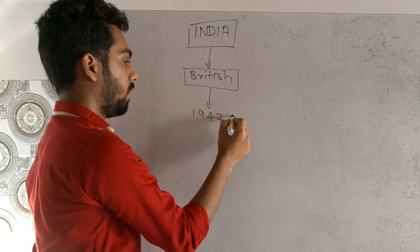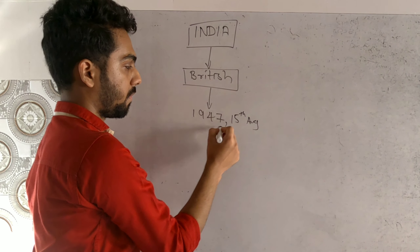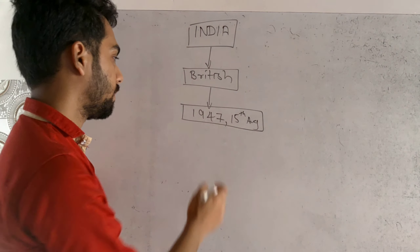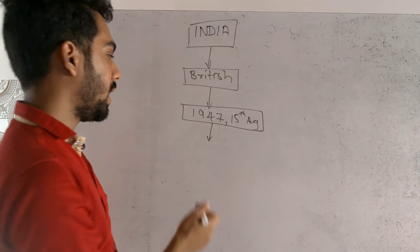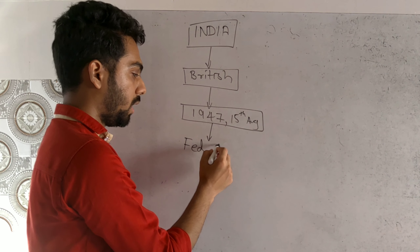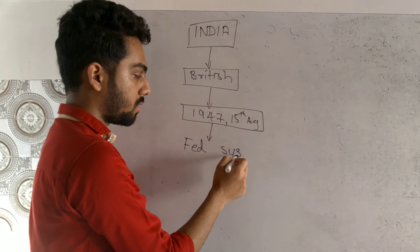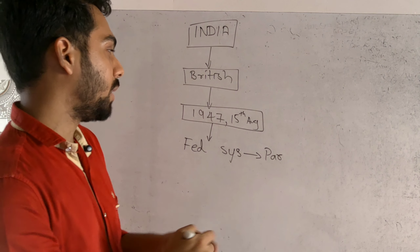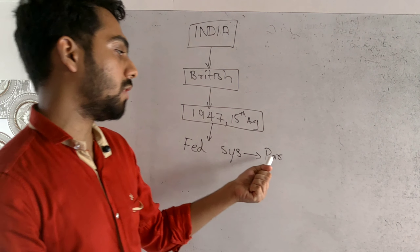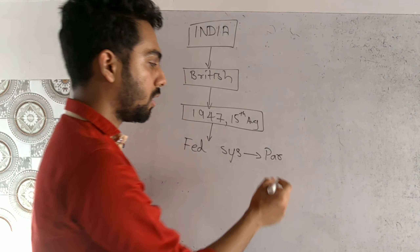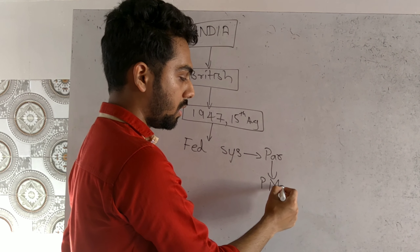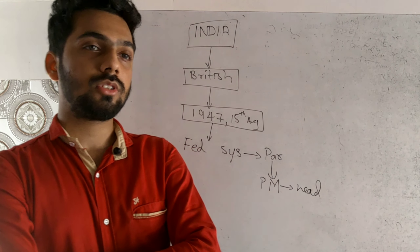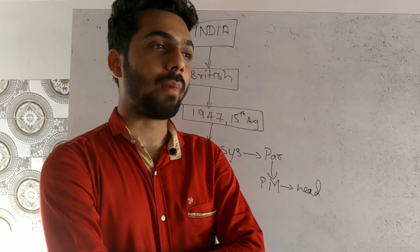Particularly, India got independence on 15th August 1947. This flowchart may be useful for all of you, so if you want you can note it down. After independence, India established a federal system — a parliamentary system — in which the prime minister is the head of the nation. For example, the present prime minister of India is Narendra Modi, so he is the head of our country in a parliamentary democracy.